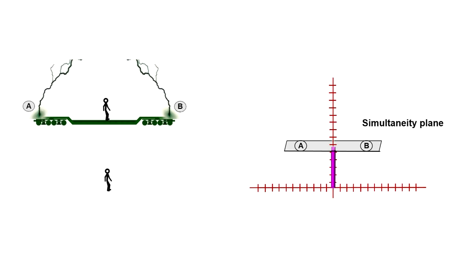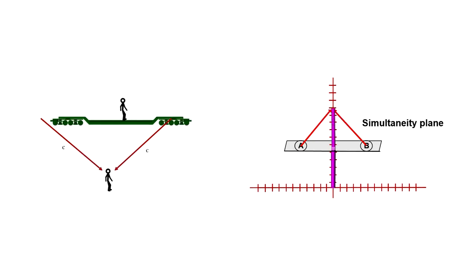We call this the simultaneity plane. The light from both events travels at the speed of light, so their world line always moves at a 45 degree angle. They reach the person on the ground at the same time.